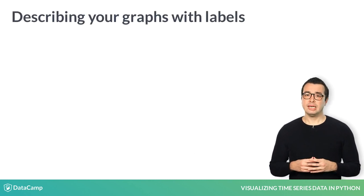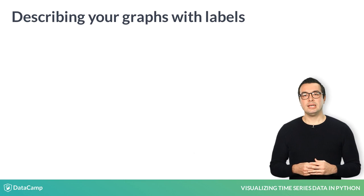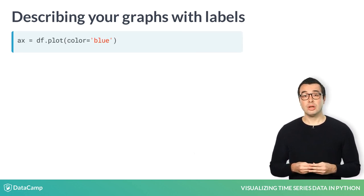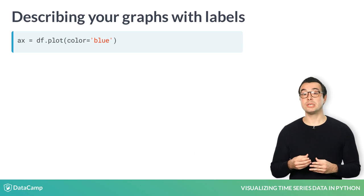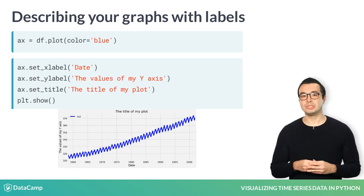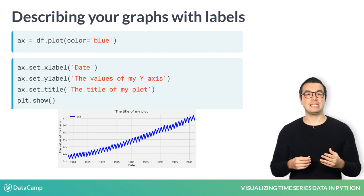It is important to remember that your plots should always tell a story and communicate the relevant information. Therefore, it is crucial that each of your plots are carefully annotated with axis labels and legends. The .plot method in pandas returns a matplotlib axis subplot object, and it is common practice to assign this return object to a variable called ax. Doing so allows you to include additional notations and specifications such as axis labels and titles, using the .set_xlabel, .set_ylabel, and .set_title methods.